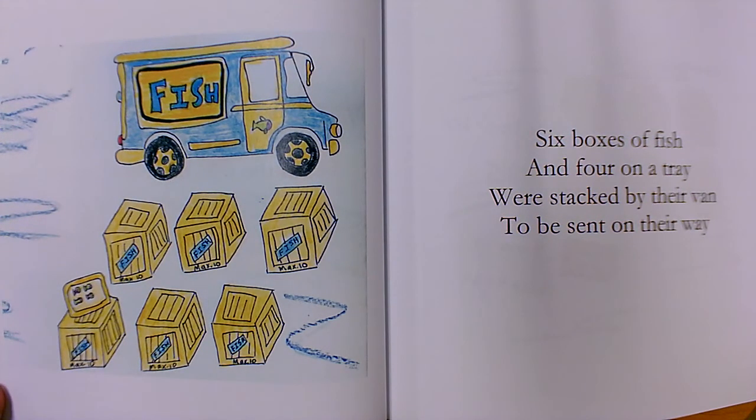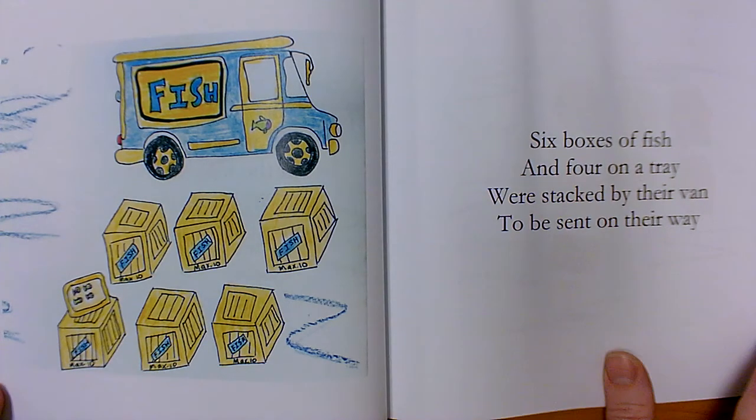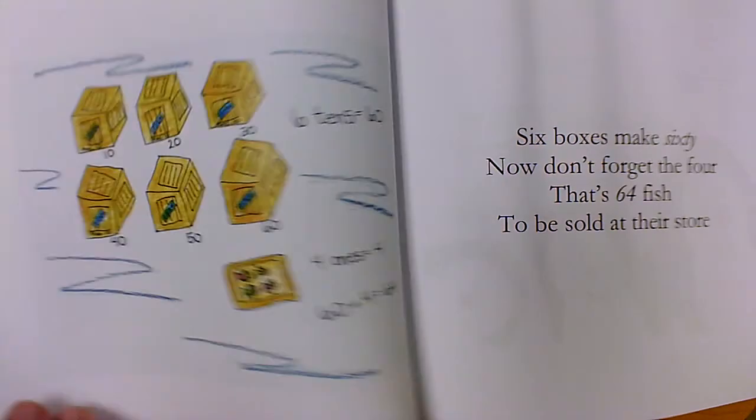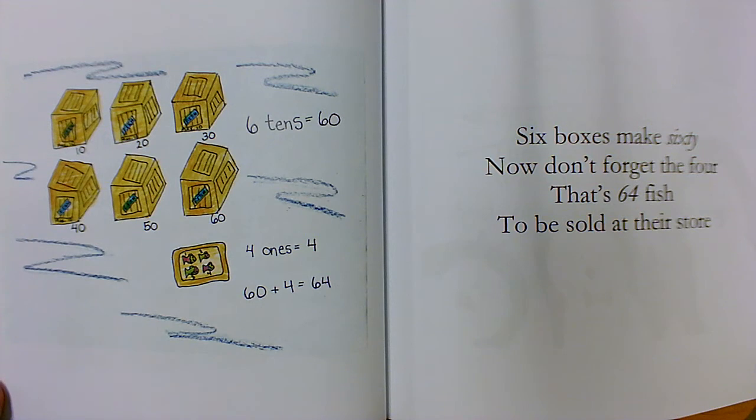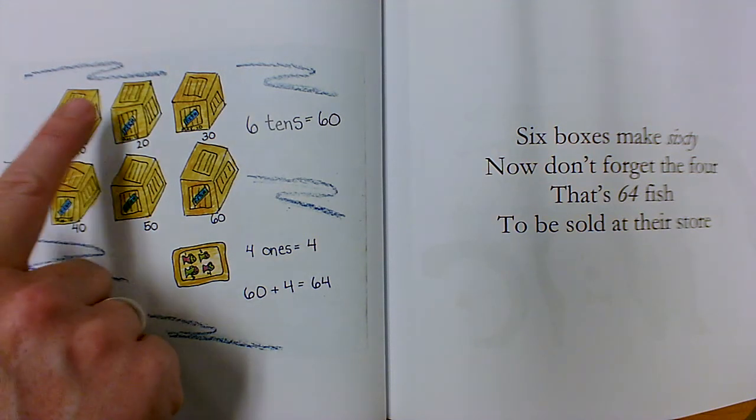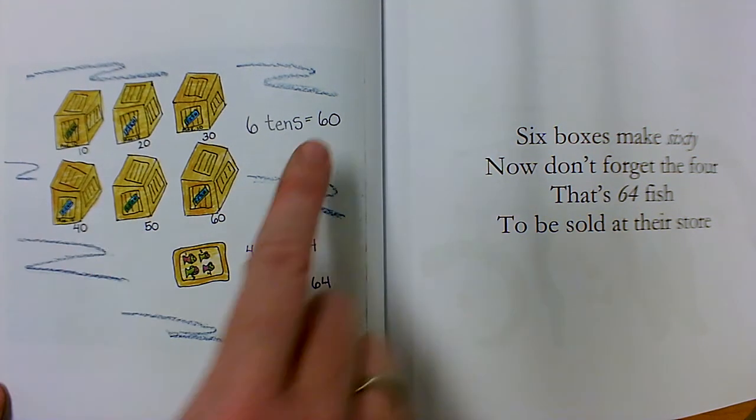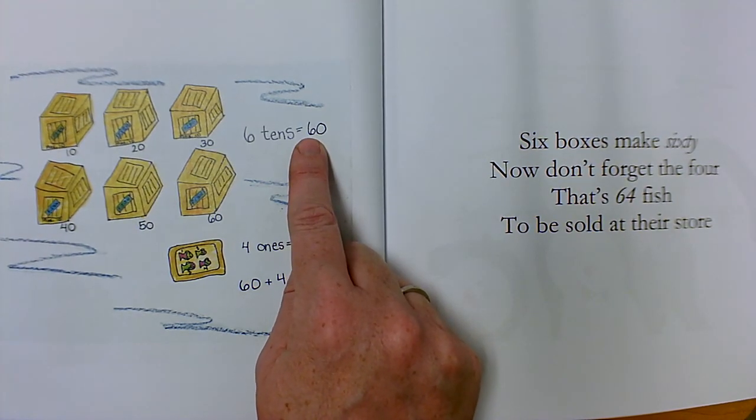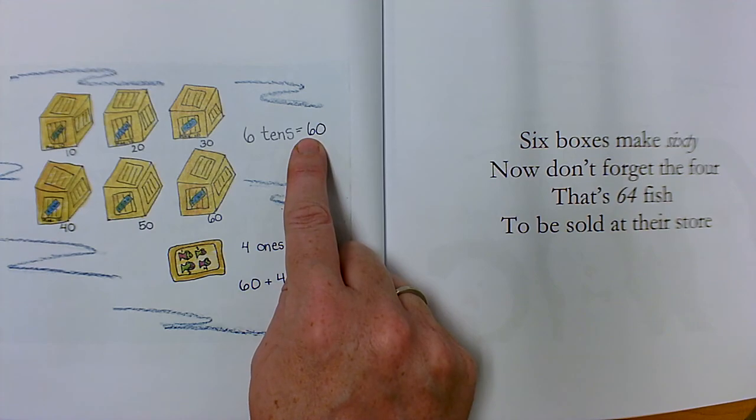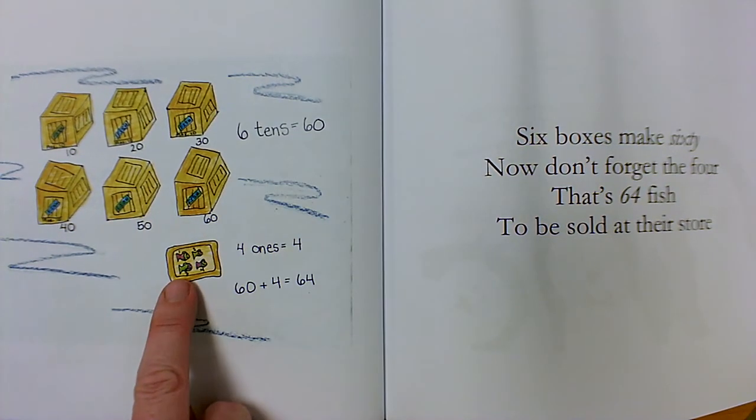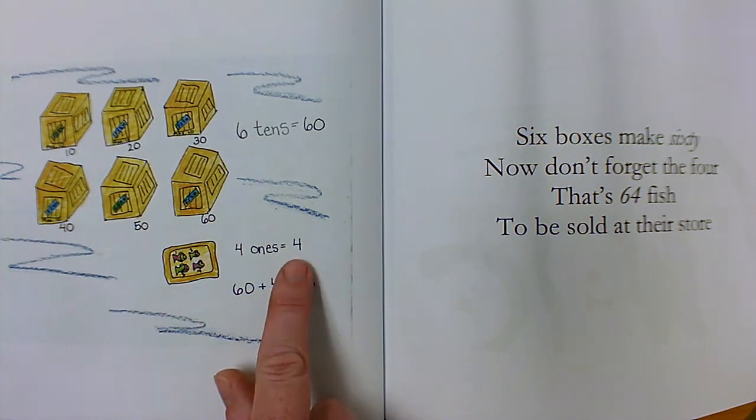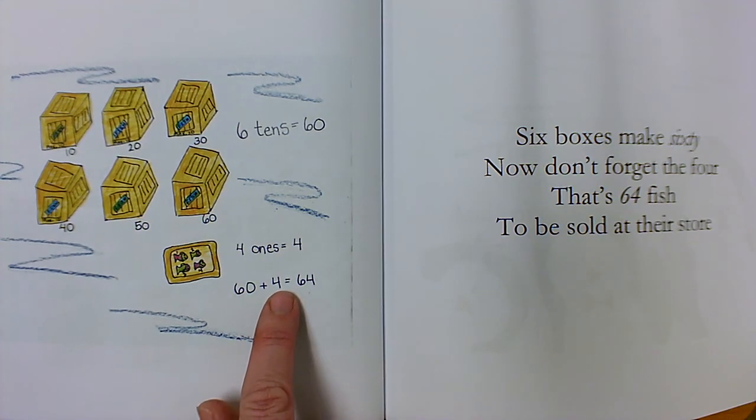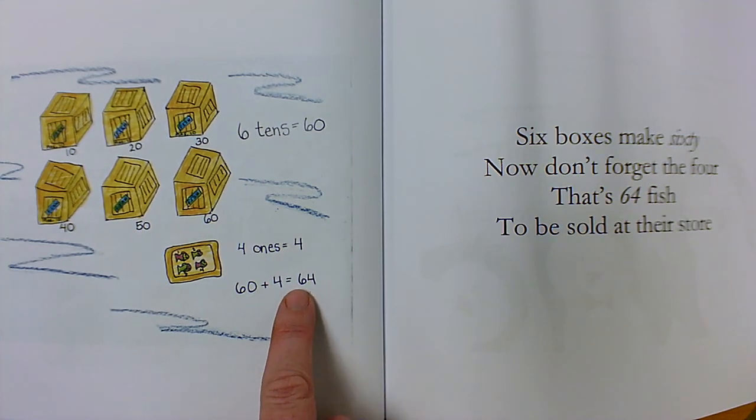Six boxes of fish and four on a tray were stacked by their van to be sent on their way. Six boxes make 60. Remember when we counted by 10s? 10, 20, 30, 40, 50, 60. This number six is worth six groups of 10. That digit is worth 60. The four ones is only worth four. And 60 plus four is equal to 64. This six is worth 60. That four is worth just plain old four.